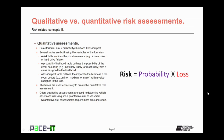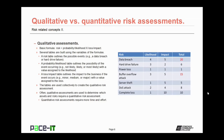To create this assessment, several tables are built using the variables of the formula. A risk table outlines the possible events, such as a data breach or hard drive failure. Then a probability or likelihood table outlines the possibility of the event occurring — as in not likely, likely, or most likely — with a value assigned to the likelihood. And then there's a loss or impact table, which outlines the impact to the business if the event occurs: is the impact minor, medium, or major, with a value assigned to the loss. These tables are used collectively to create a qualitative risk assessment.